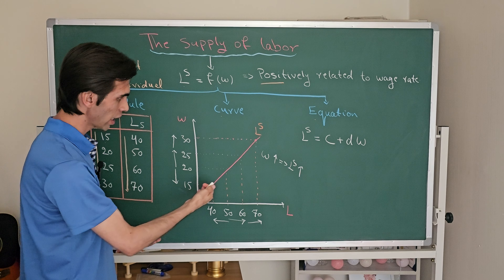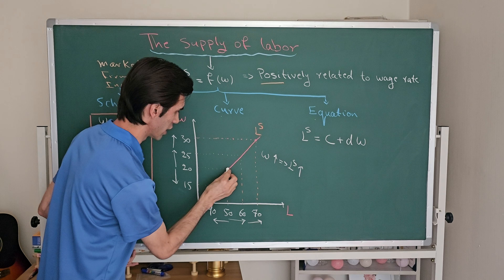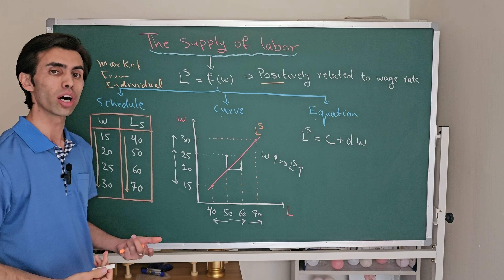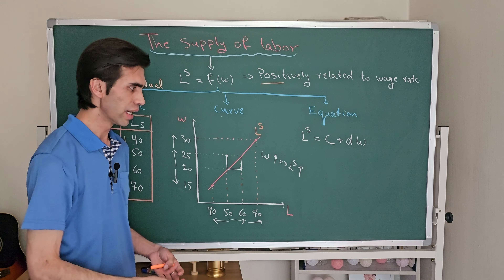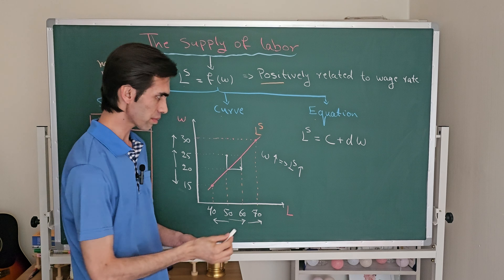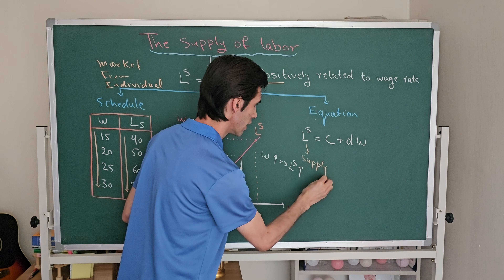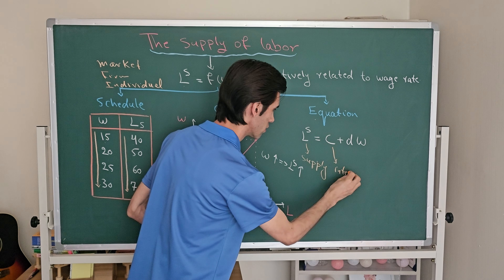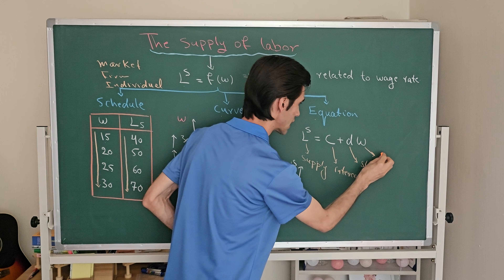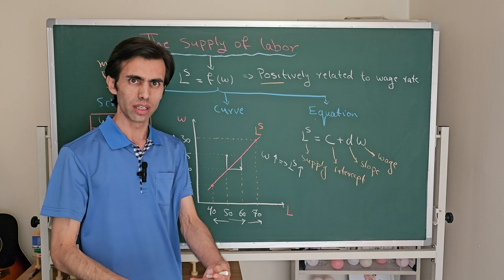Due to this relationship, the labor supply curve has an upward slope — it means that when the wage rate increases, the labor supply will increase. The slope is positive because we react positively to the wage rate. We can also show this relationship using the labor supply equation: LS = c + dW, where LS stands for labor supply, c stands for the intercept, d is the slope, and W is the wage rate. The intercept shows how much labor we will supply when the wage rate is equal to zero.